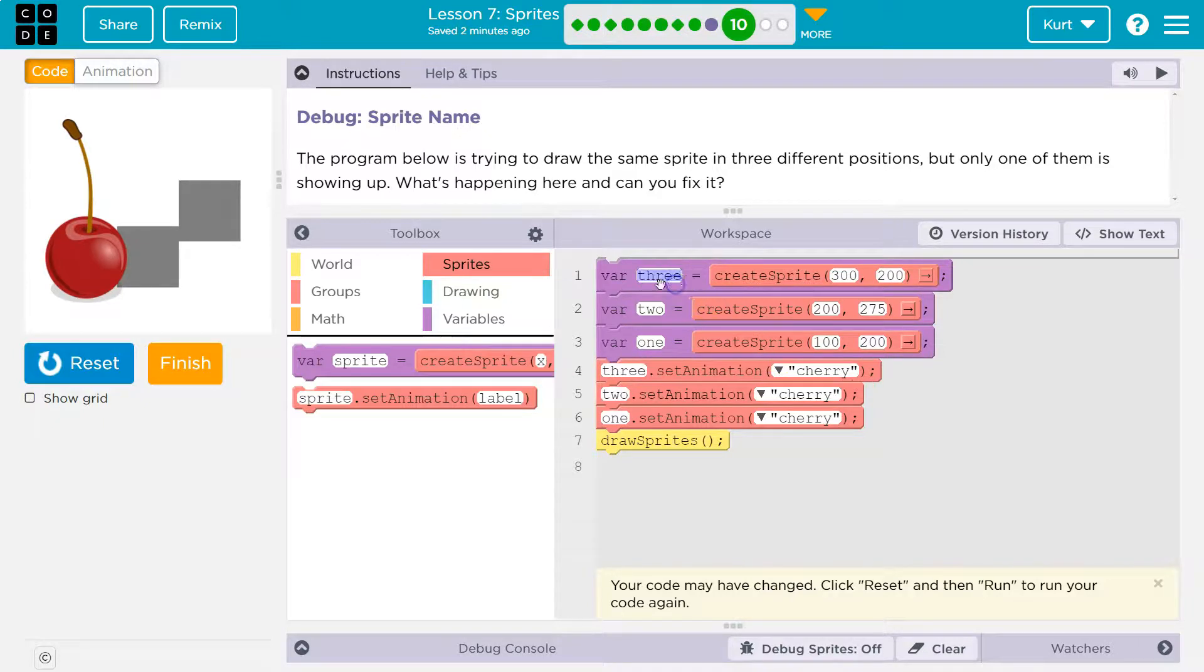that as two, and I should probably even be more descriptive than this, right? Maybe ideally I would have done cherry one, cherry two, cherry three. That is also a great way to go about this, and it is more descriptive.